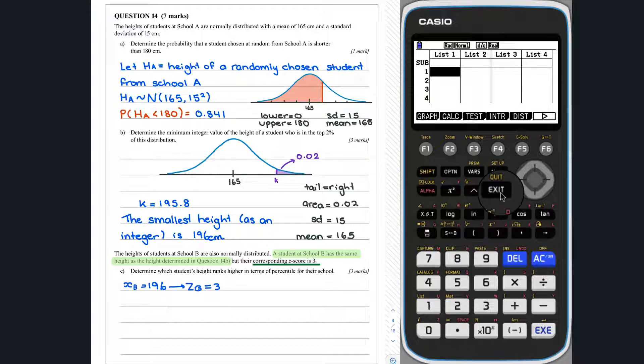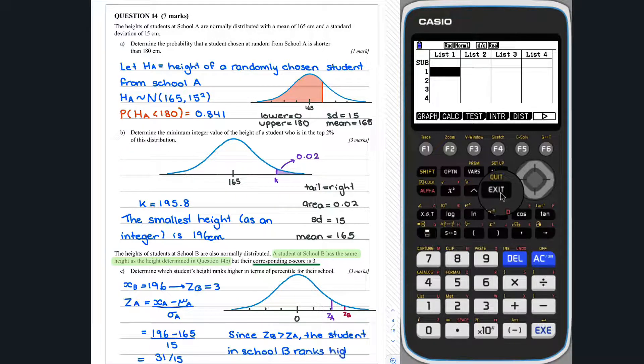We now want to calculate the Z-score for a student at School A with a height of 196 centimetres, so we can compare this value to School B. We find that the Z-score is equal to 31 over 15, which is just a little bit bigger than 2. To visualise this, we can draw the standard normal distribution with our Z-scores labelled. Since Z-B is greater than Z-A, the student in School B ranks higher in terms of percentile.